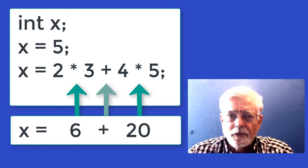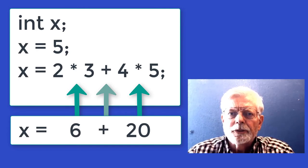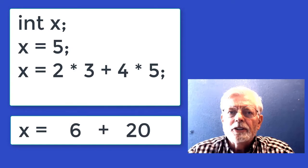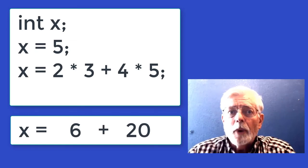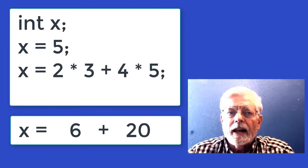Therefore, the expression is evaluated as 6 + 20, which becomes 26. All of this is computed before the assignment operator (equals) at level 16, which takes the value 26 from the right side of the equal sign and stores it into the variable x.